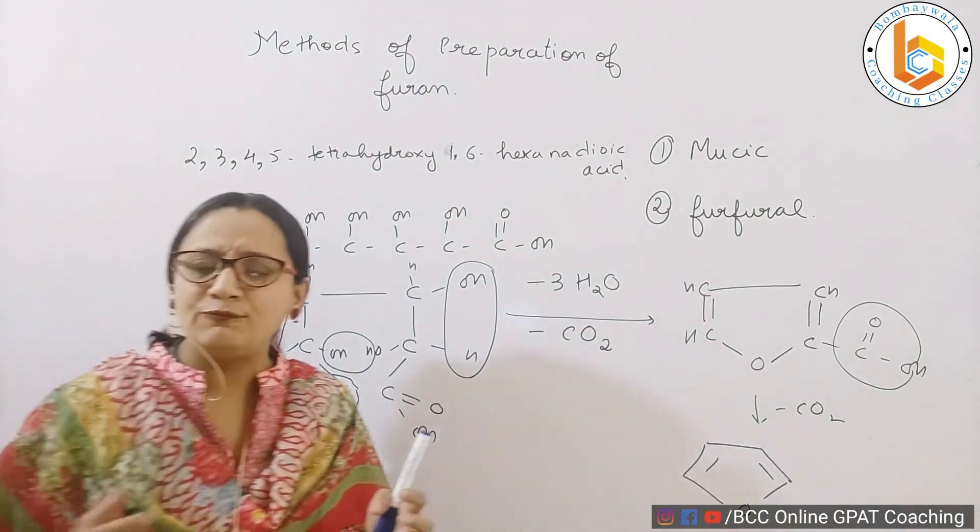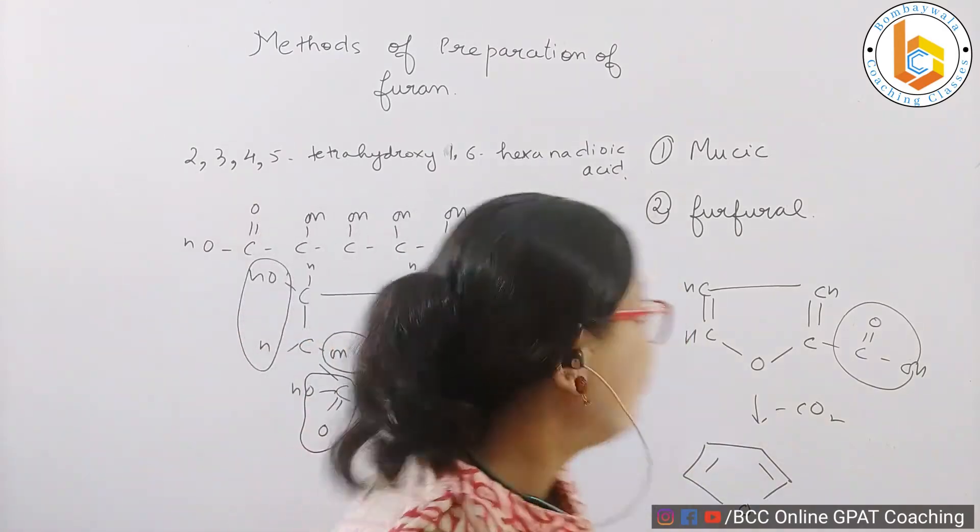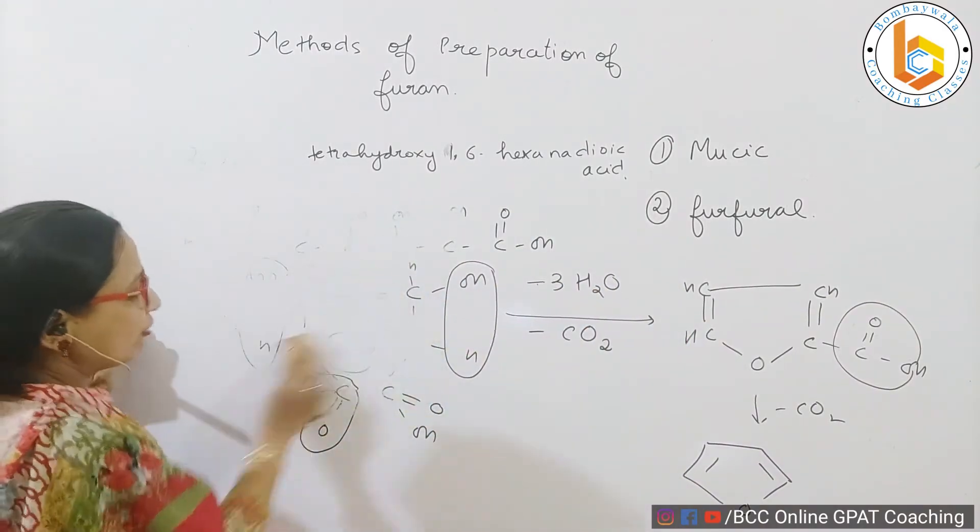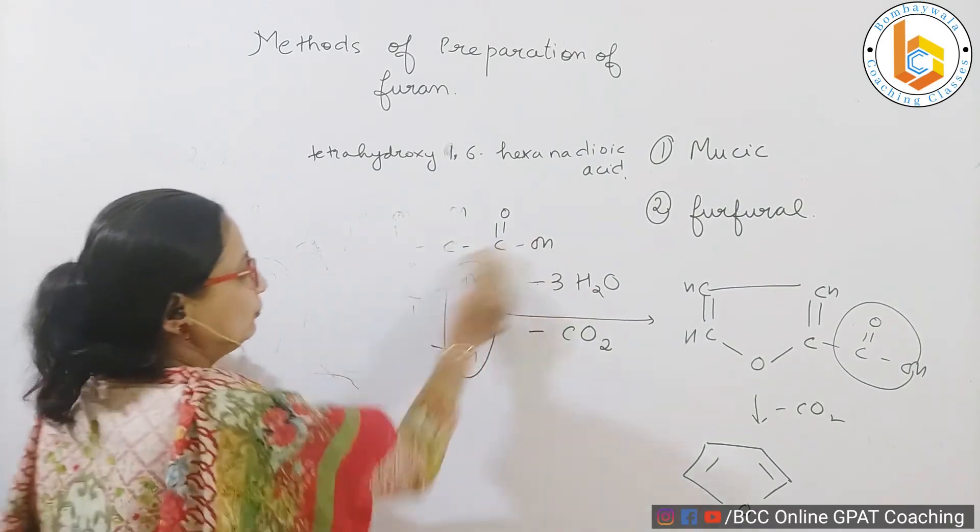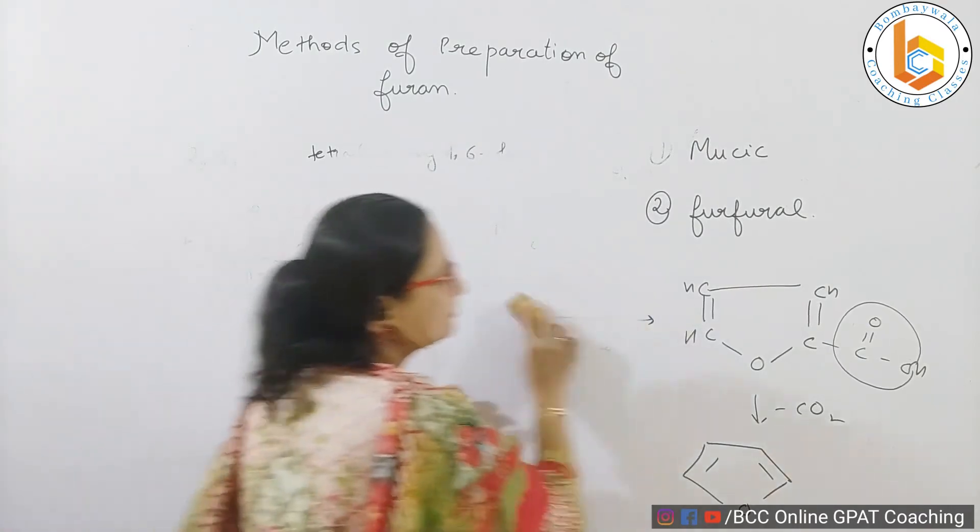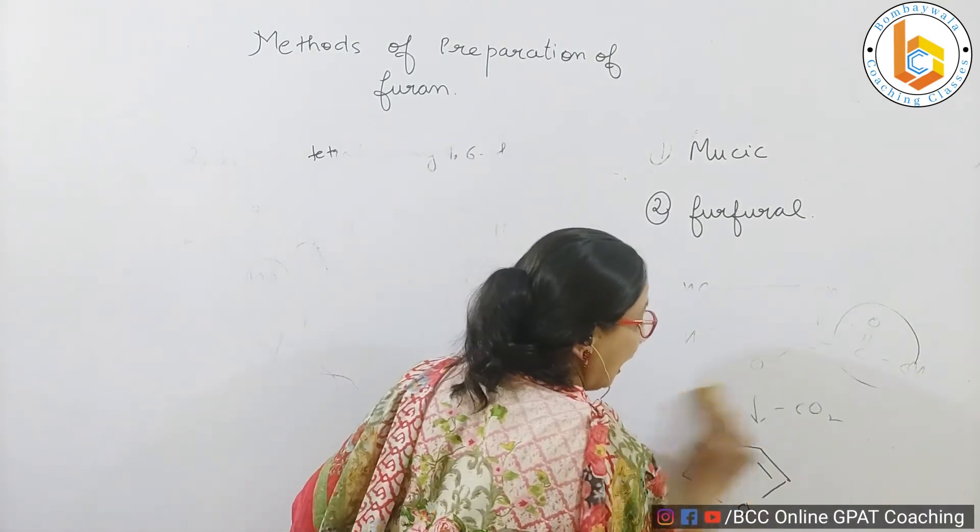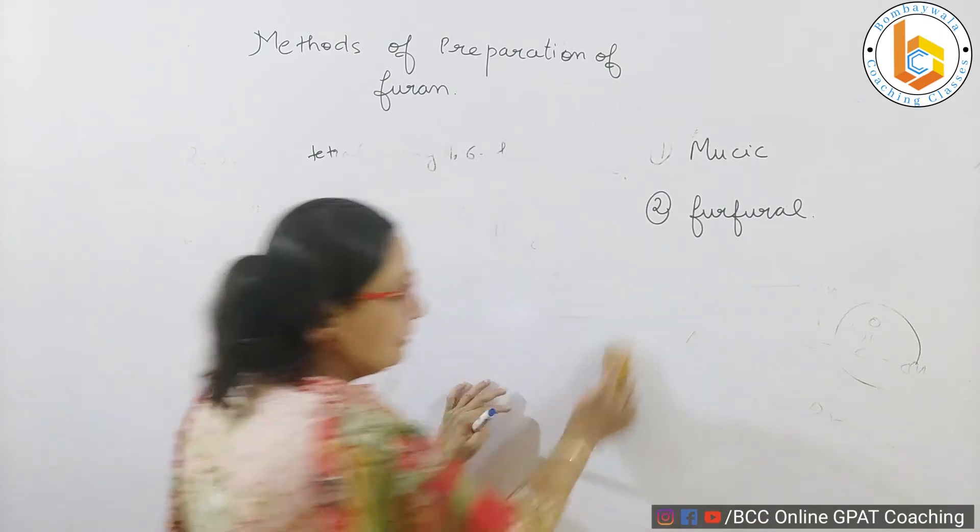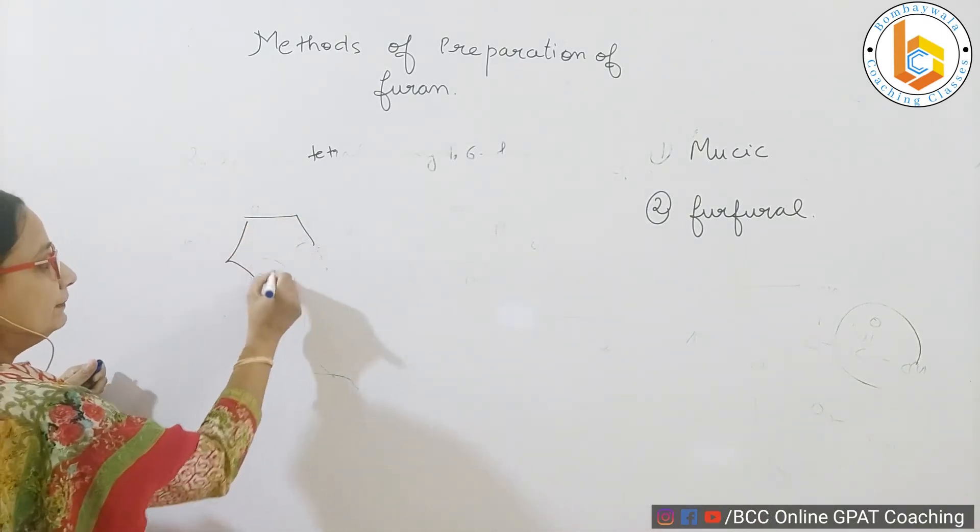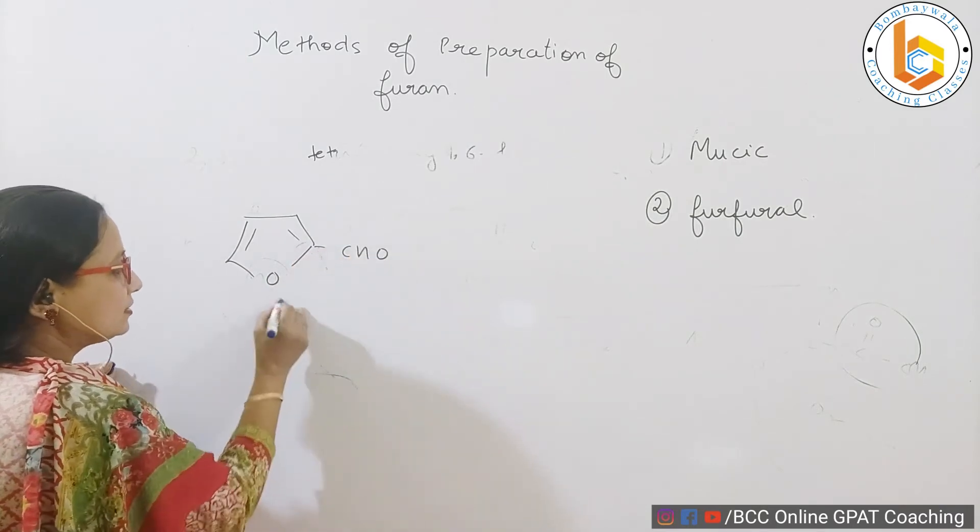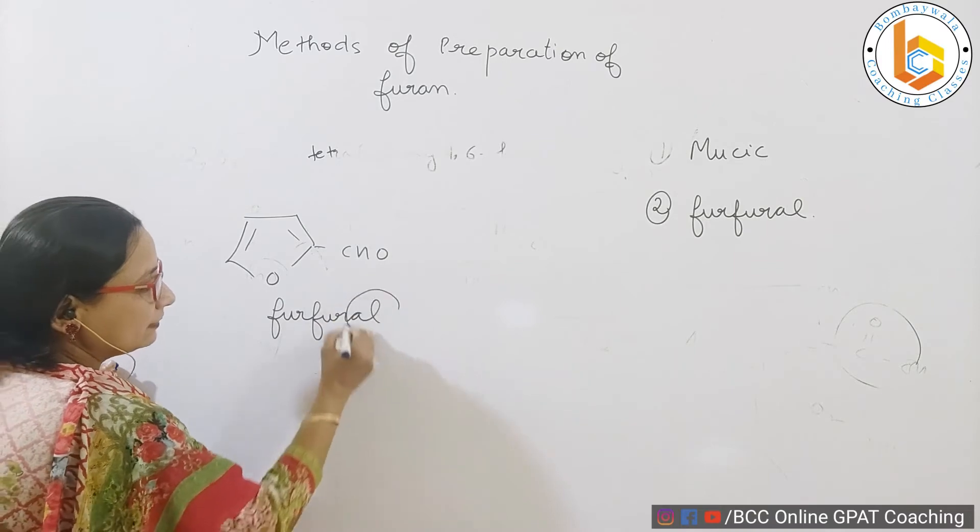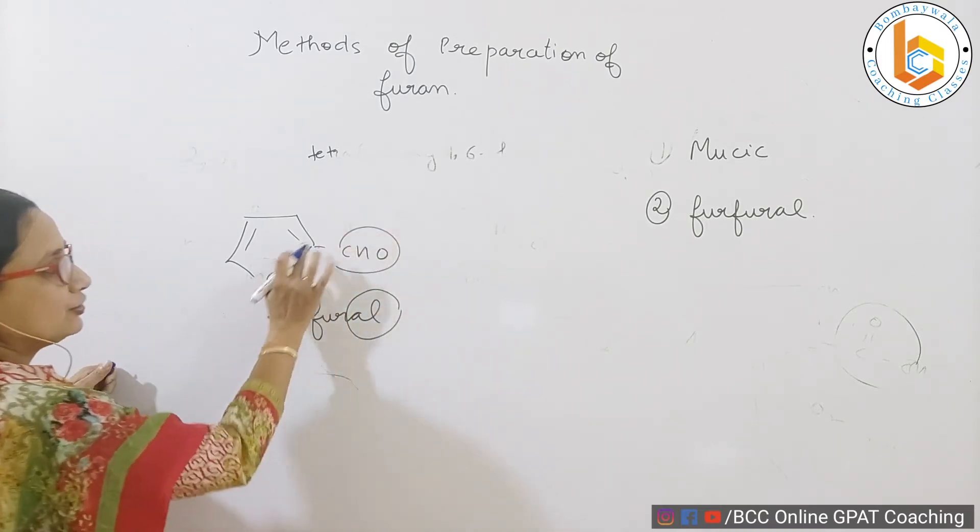Now the second method of preparation, which is much more easier than the first method, is from furfural. Now what is this furfural? Furfural. It means furan, and furan on the top of an al. Al is nothing but aldehyde. Now what is this furfural? Have a look. This is my furan, and this is CHO. This is furfural. Al because there is an aldehyde functionality at position number two.